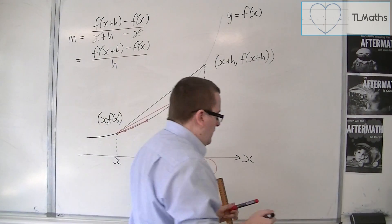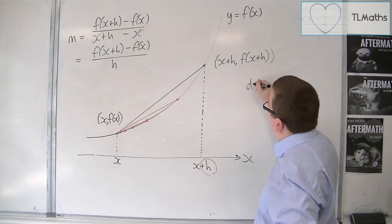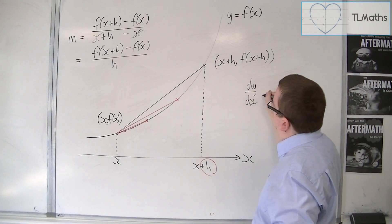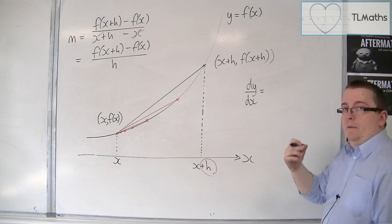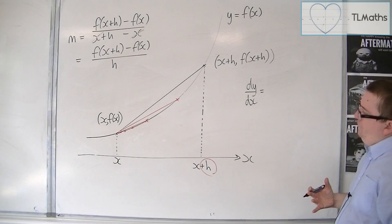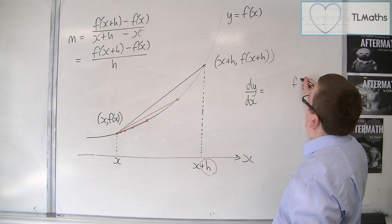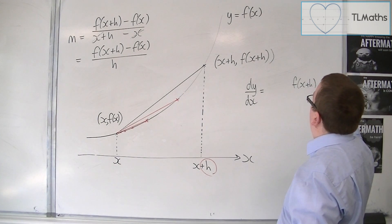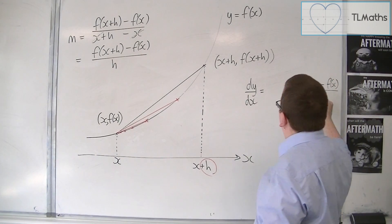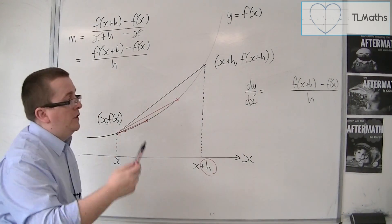So, in actual fact, the gradient of the curve, the dy by dx, is actually equal to f of x plus h minus f of x over h, that chord, that's the gradient of the chord.